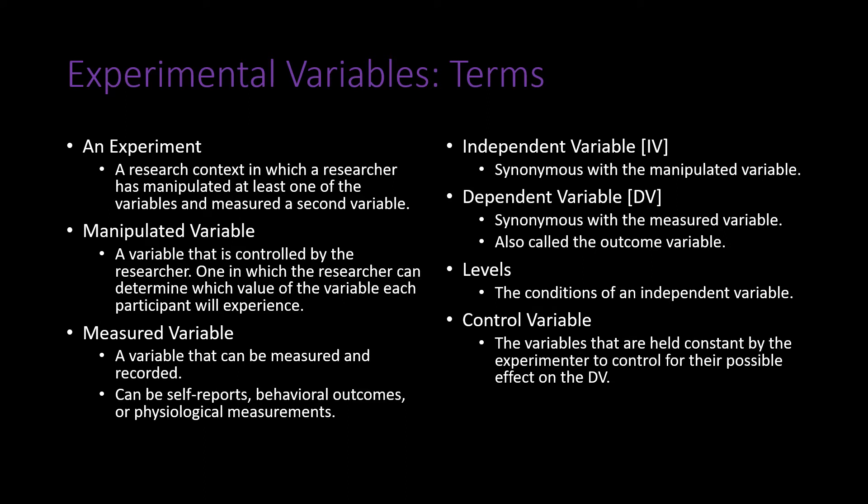Control variables are variables held constant by the experimenter to control for their possible effect on the dependent variable. In the pasta study, they continually refilled the bowls so they never appeared too empty, because that emptiness might cause people not to take as much food due to social norms. By maintaining the bowls at least halfway full, they reduced the impact of how full the bowl was on eating behaviors. Experiments often maintain many such control variables to keep other factors from influencing results.